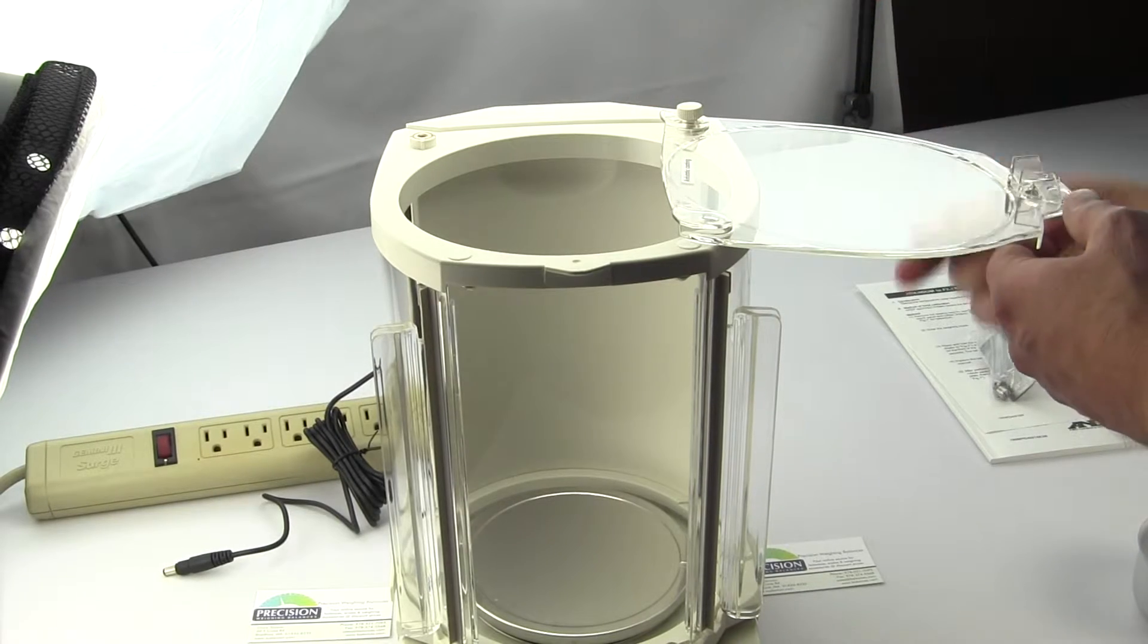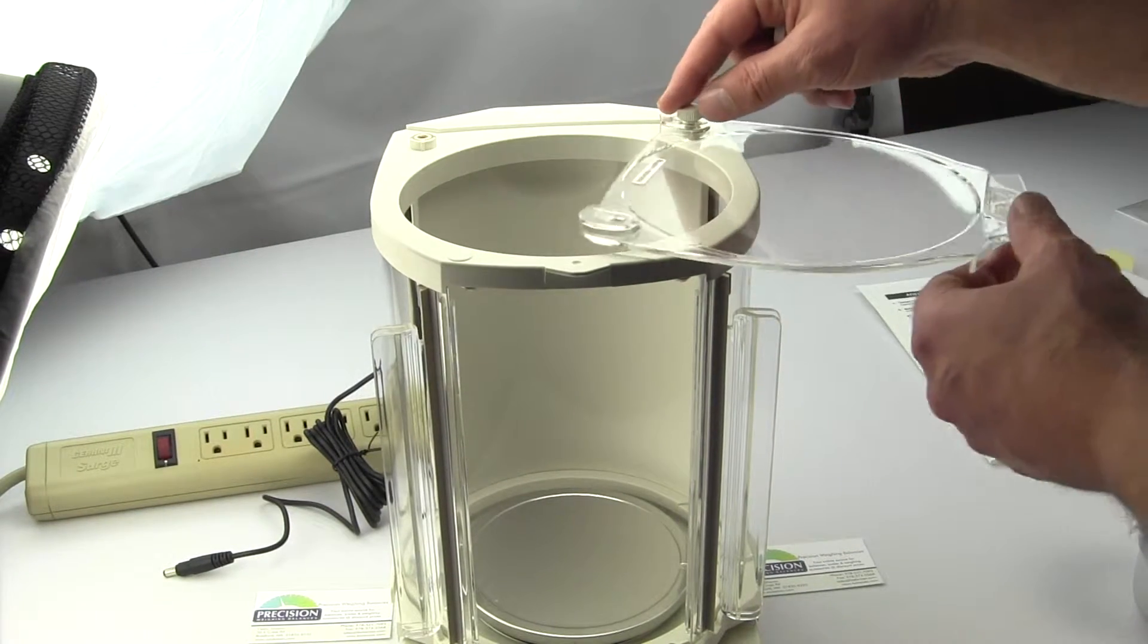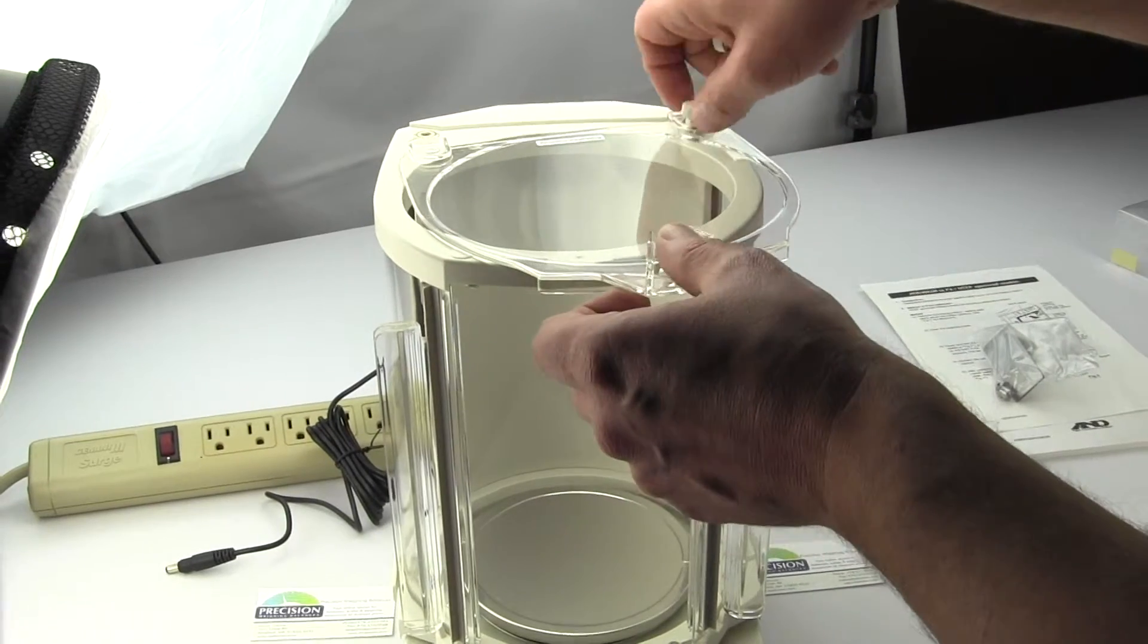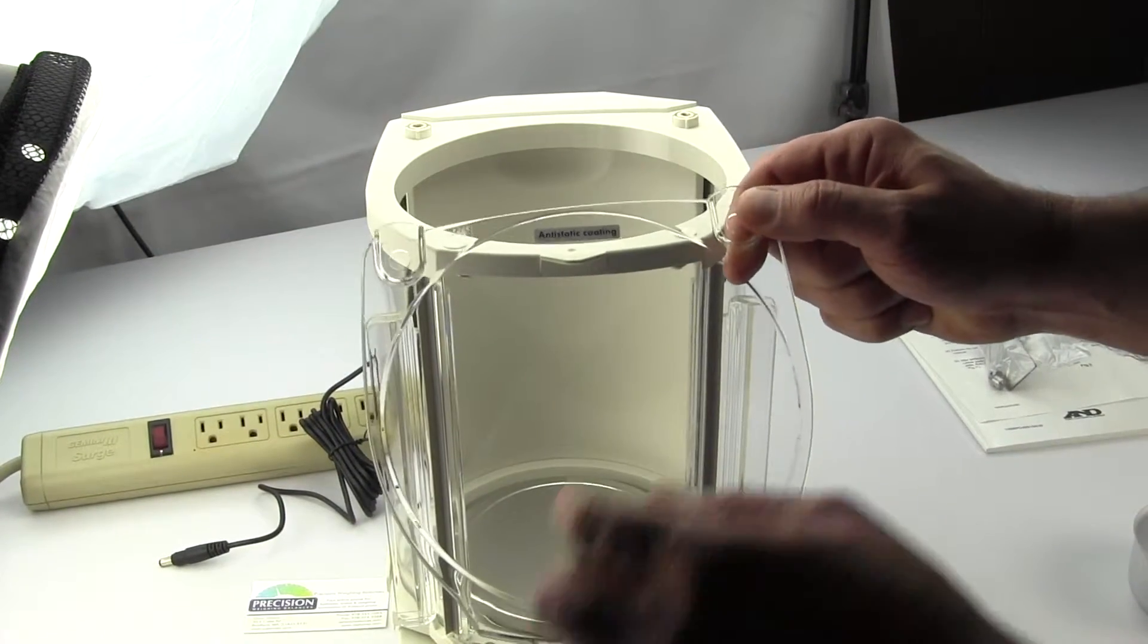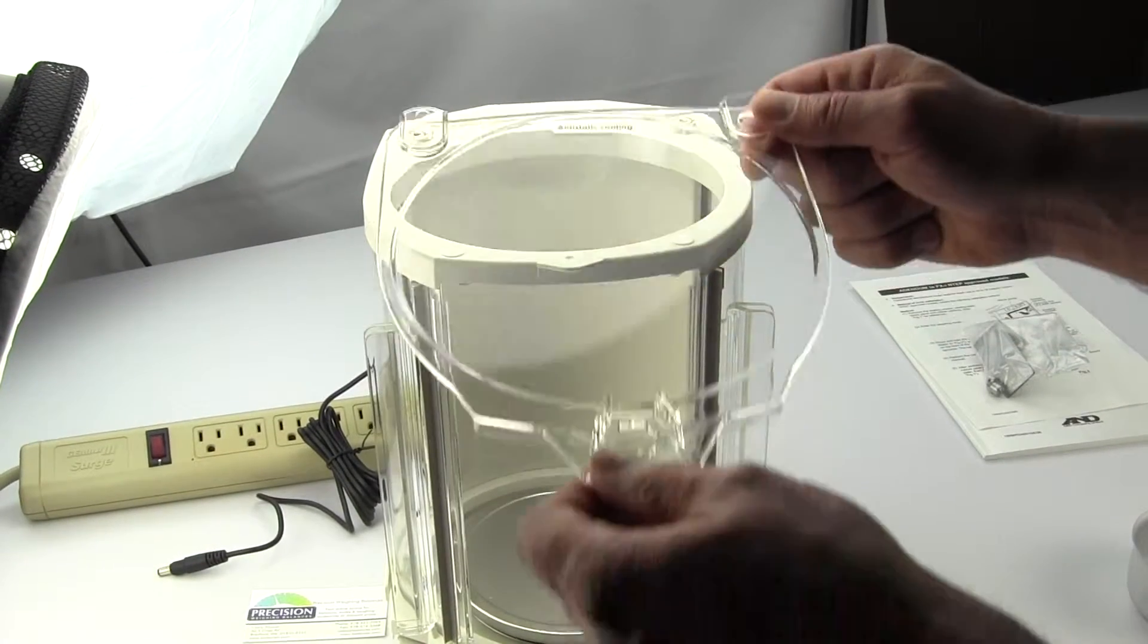I mean you could drop a burette, but really to access the balance it would either be the right or the left door. This standard plastic all has an anti-static coating altogether.